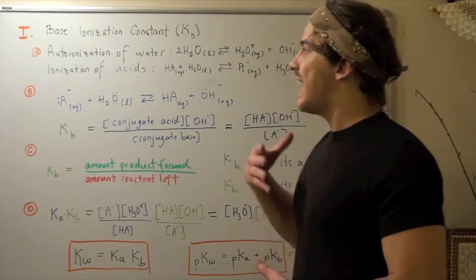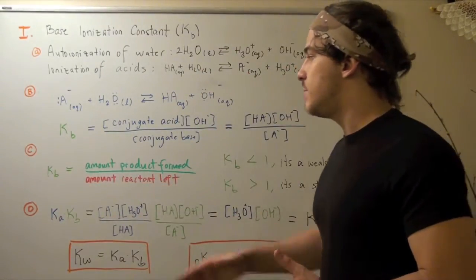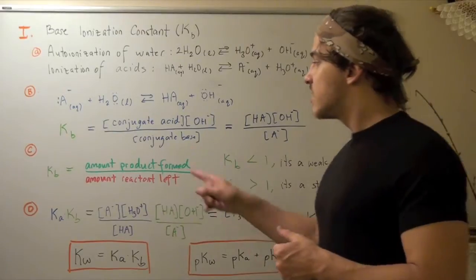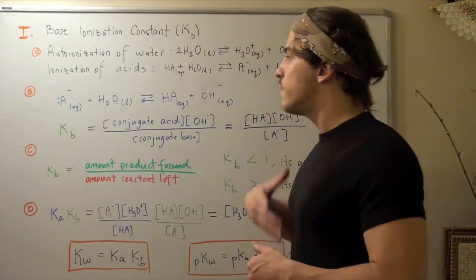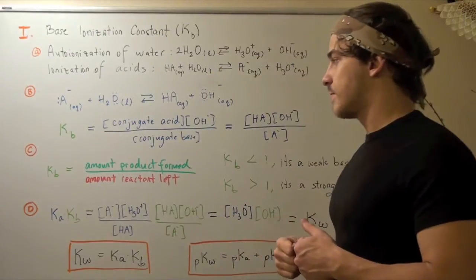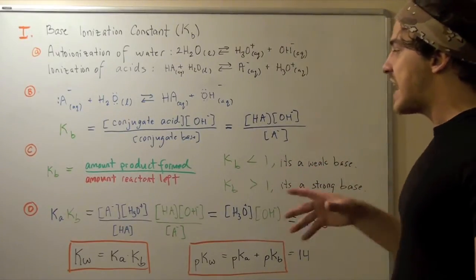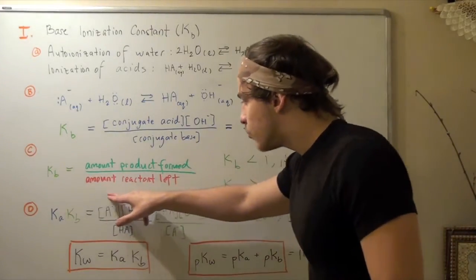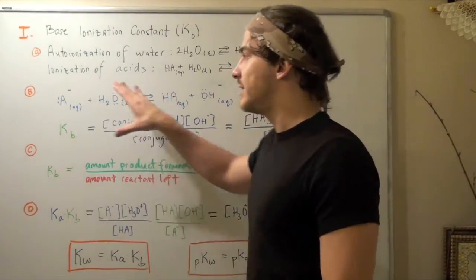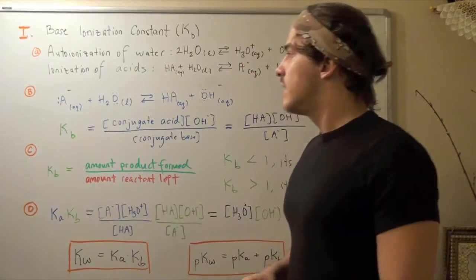The same way we spoke about Ka's being ratios in terms of ionization of acids, we can also talk about Kb's, or ionization of bases, being ratios — ratios of amount of product formed over the amount of reactants left. So the greater our value for Kb, the more favorable our reaction is, and the stronger our base is. If Kb is greater than 1, we can say it's a strong base. If it's less than 1, it's a weak base, because the amount of reactant left is much greater than the amount of product formed — meaning the base is not very good at taking that H away from the acid.